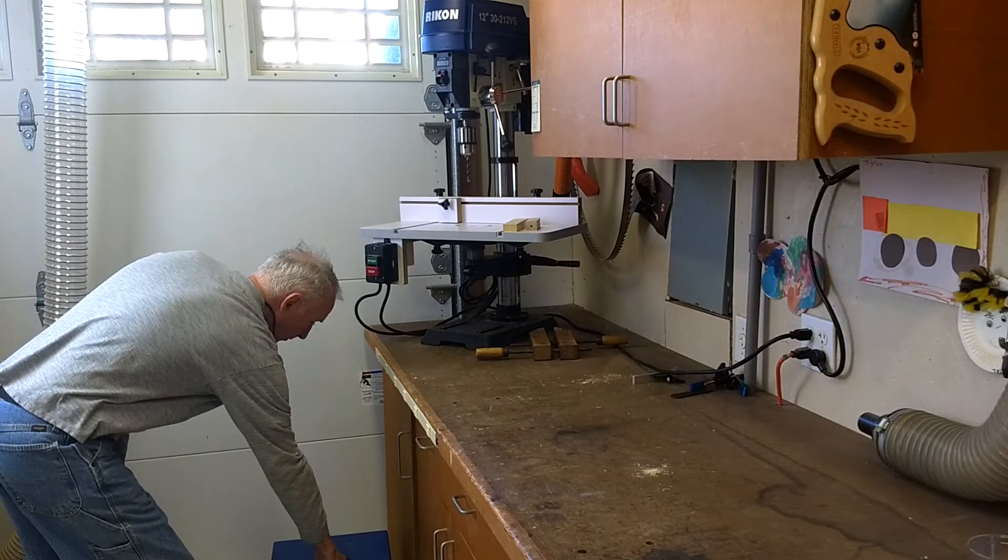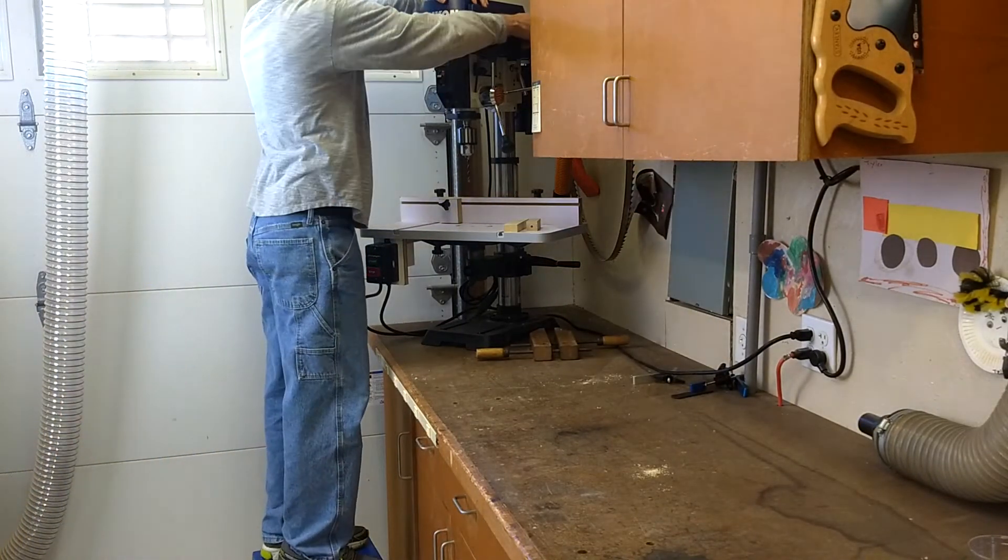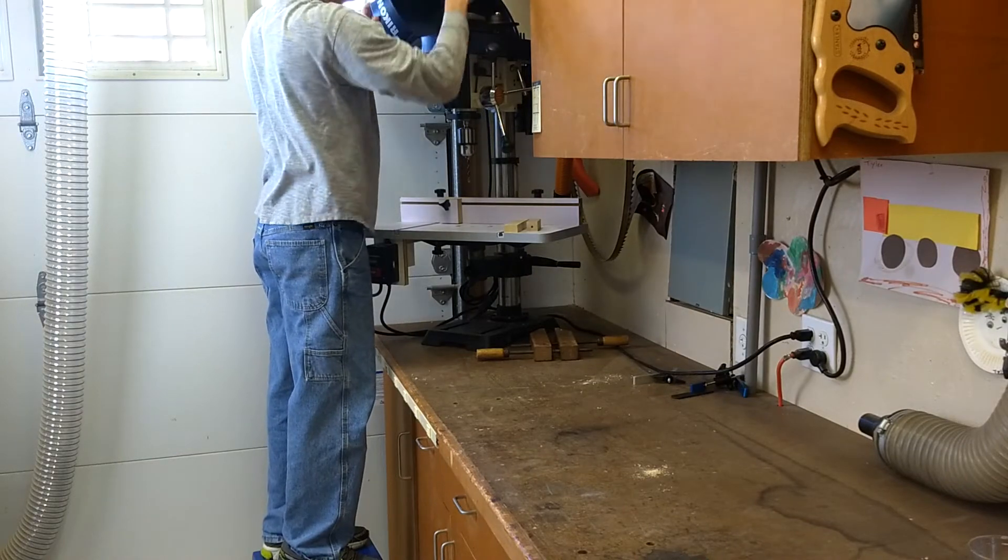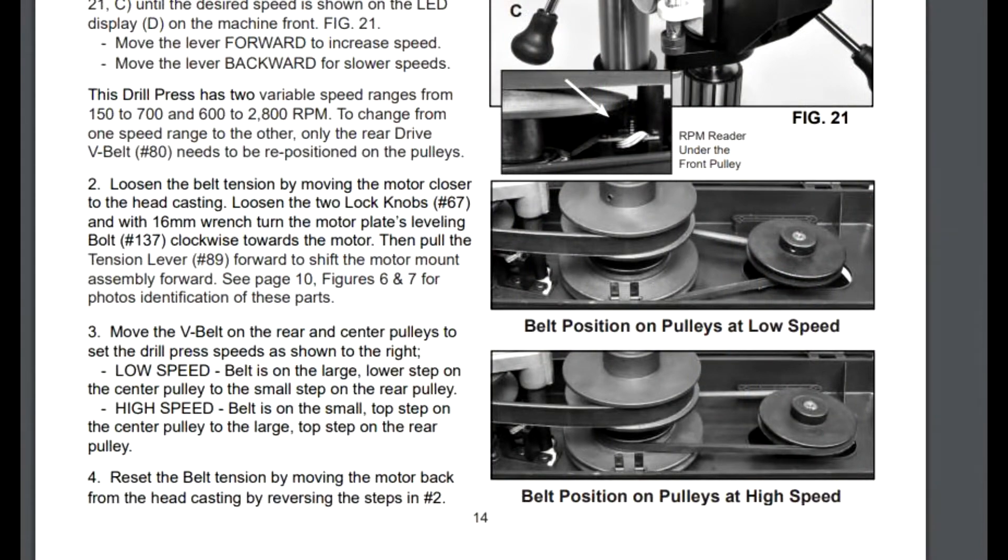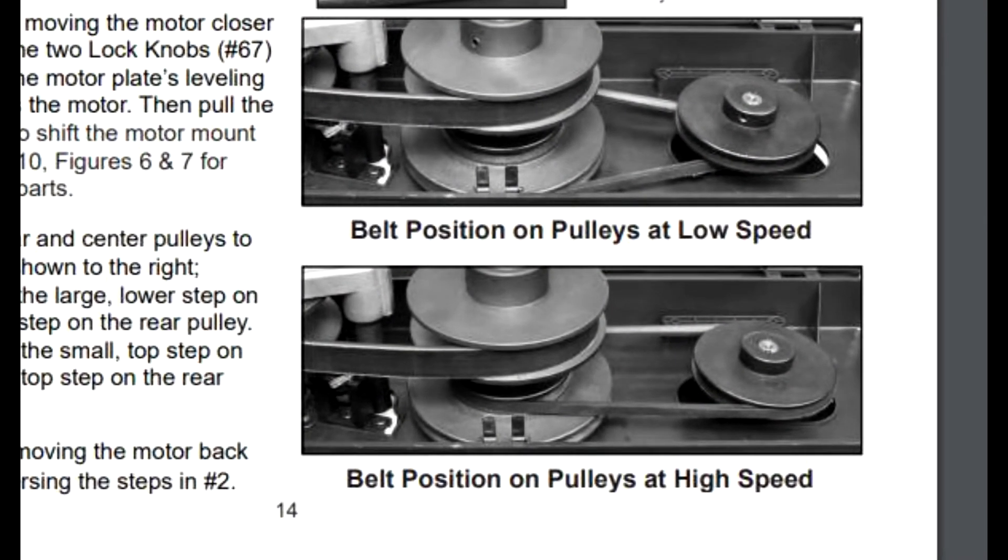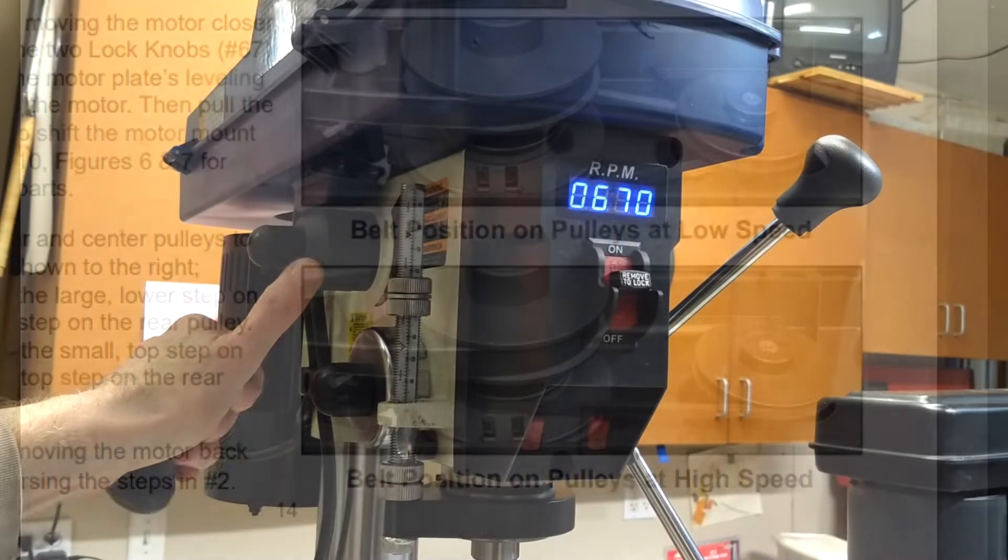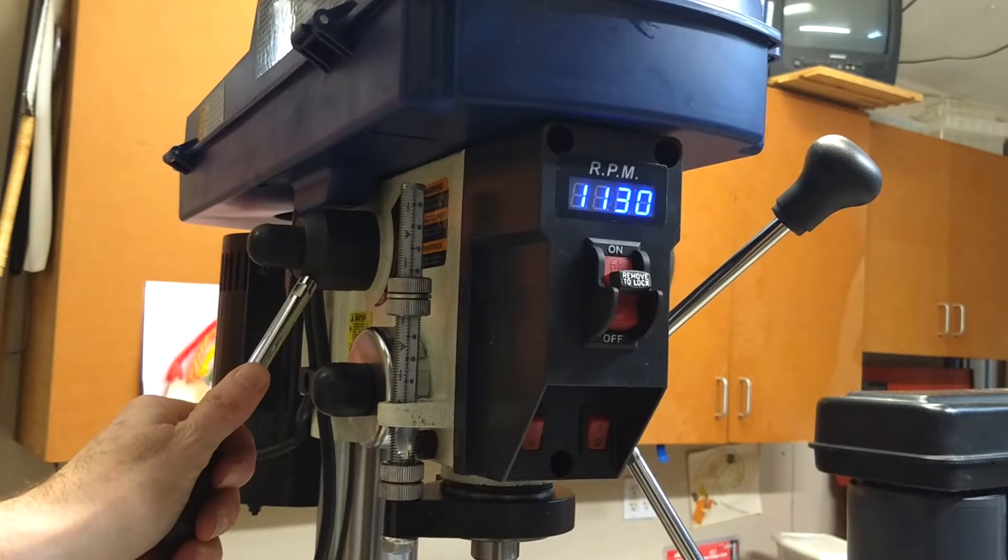While the belt change is quick and relatively easy, given that the press is over 3 feet tall means that you have to get on a ladder or step stool to see what you're doing when altering the belt position. If I had read the manual before purchasing, I would have known. But the Rikon product webpage has no mention of this belt change. Still, I must say, I really like the adjustable speed feature.